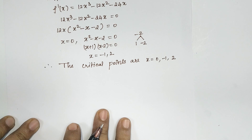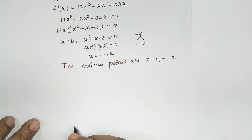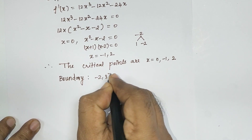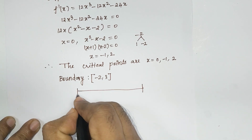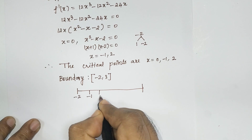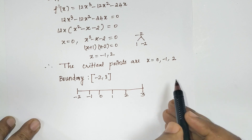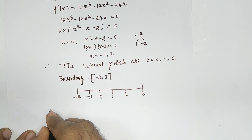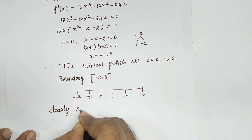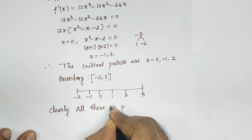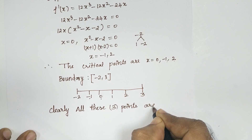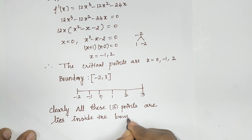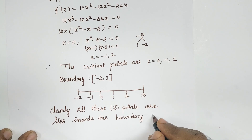After finding the critical points, we check whether they lie inside the boundary or outside. Our boundary is [-2, 3]. On the number line: -2, -1, 0, 1, 2, 3. We can check: x = 0 is inside the boundary, x = -1 is inside the boundary, x = 2 is inside the boundary. So all three critical points lie inside the boundary, and we can find the F values for all of them.